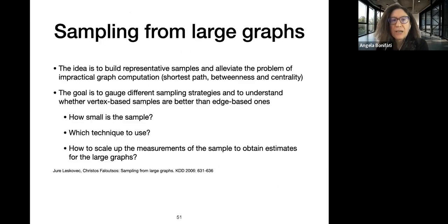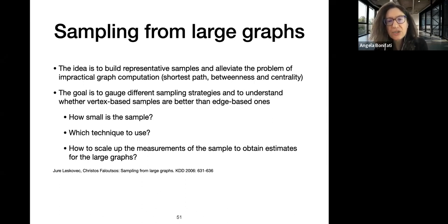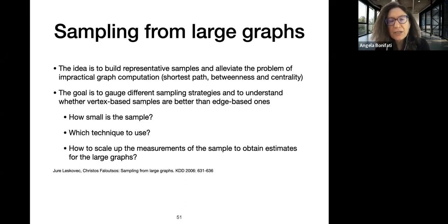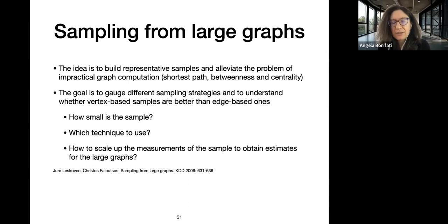The KDD paper goal was to compare different sampling strategies and understand which ones are better, and how to scale up measurements from a sample to obtain good estimations for large graphs. However, they did not focus on complex graph queries — they focused on graph operations like betweenness centrality and shortest paths. One idea is how to use sampling for our operations — complex graph queries — in graph databases.